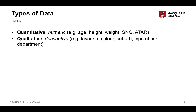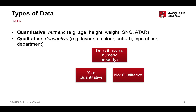We can also have qualitative data, which is more descriptive — not inherently numeric, but something that describes a type of thing. For example, everybody's favourite colour, what suburb you live in, what type of car you drive, what department at the university you're studying in, where you work — anything like that, which is a more descriptive piece of information, is called qualitative data or a qualitative variable. To determine whether something is quantitative or qualitative, ask whether it has a numeric property: if yes, it's quantitative; if not, it's qualitative.